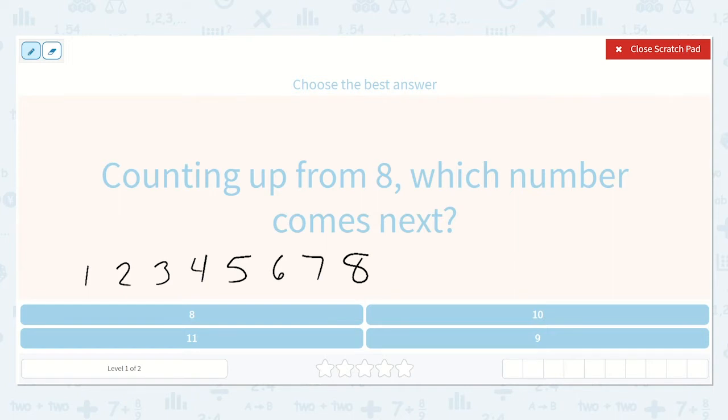Which number comes next? Nine. That made it a little bit easier, huh? Because we're used to counting in order, so it might help to start from a lower number. So we know the next number is nine.